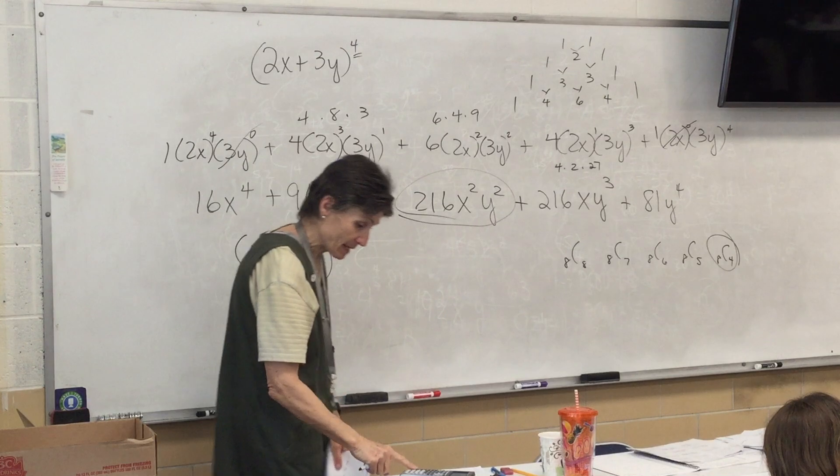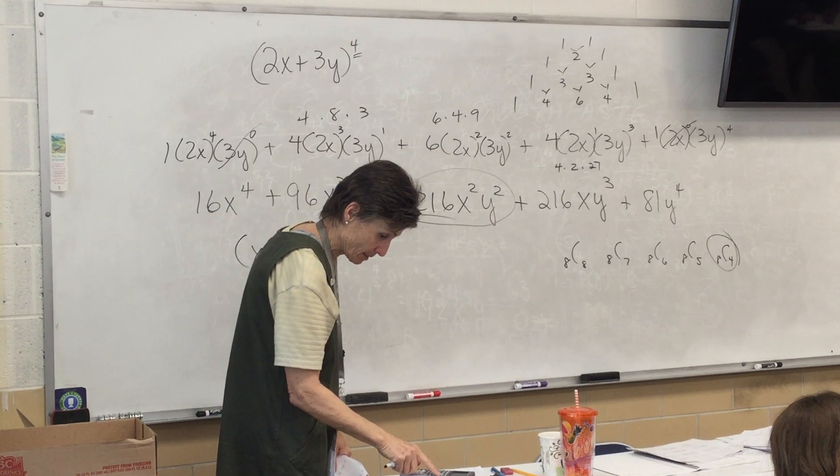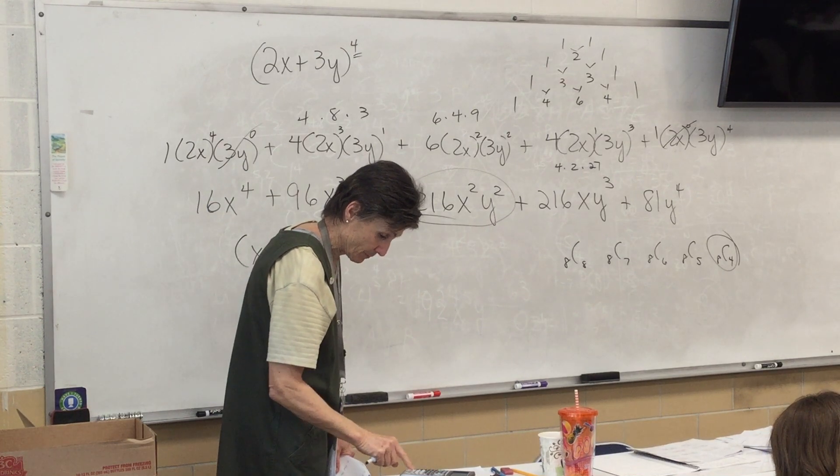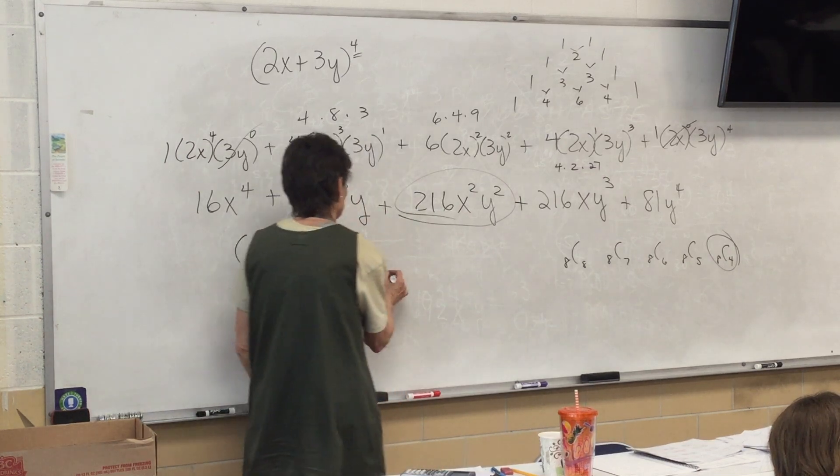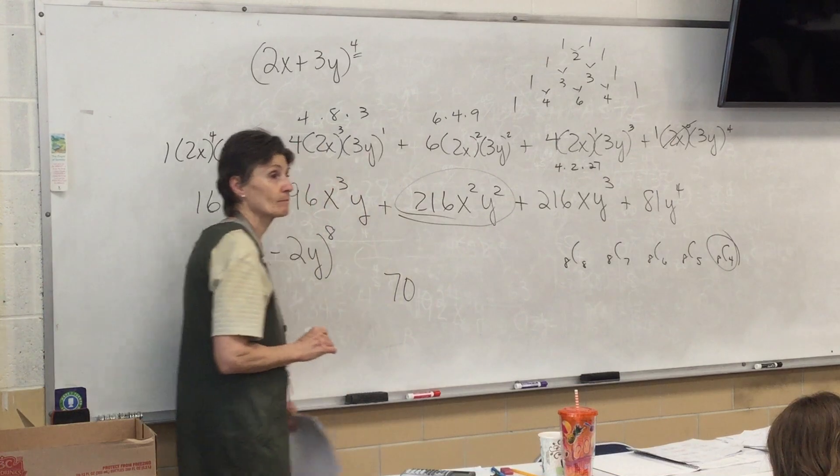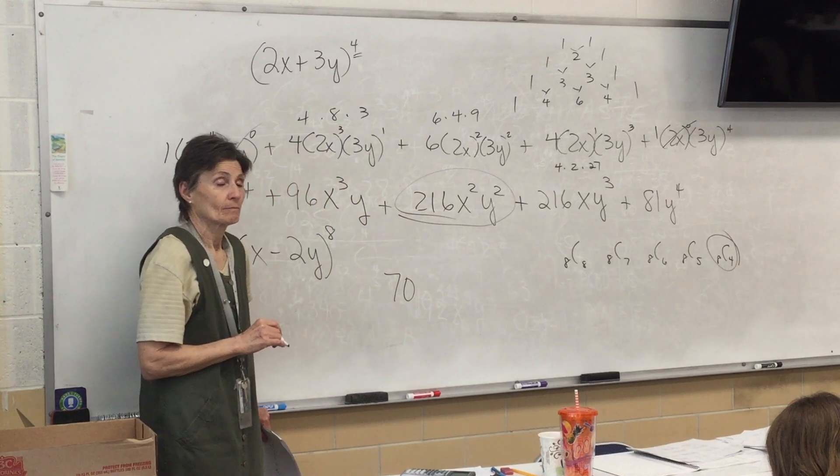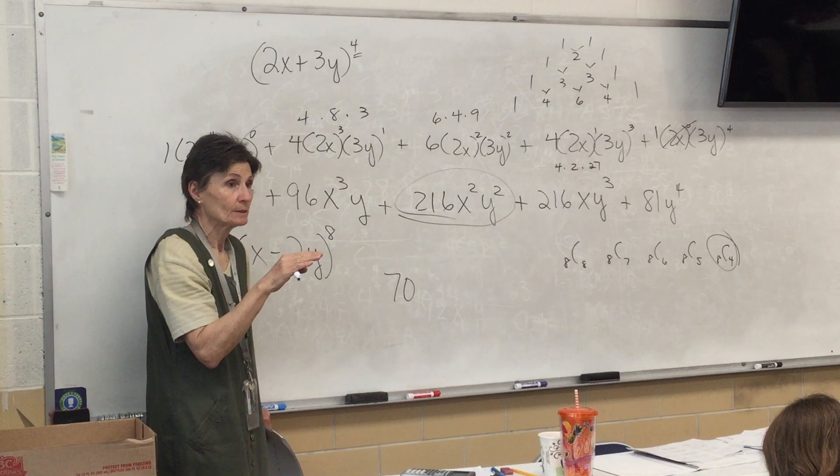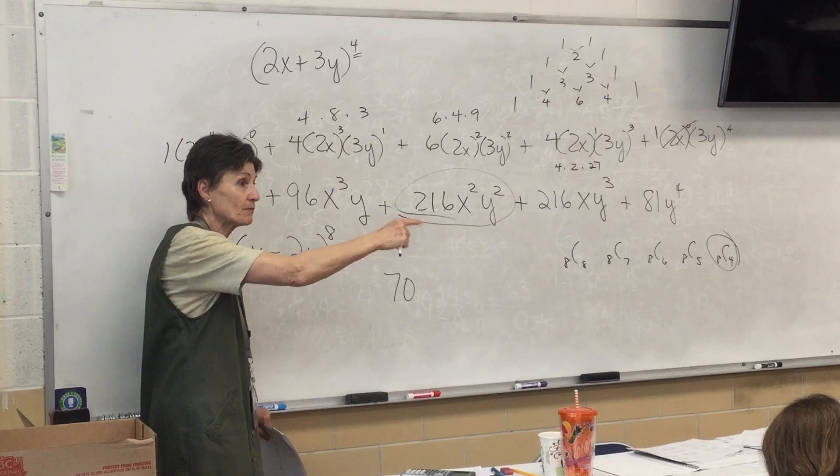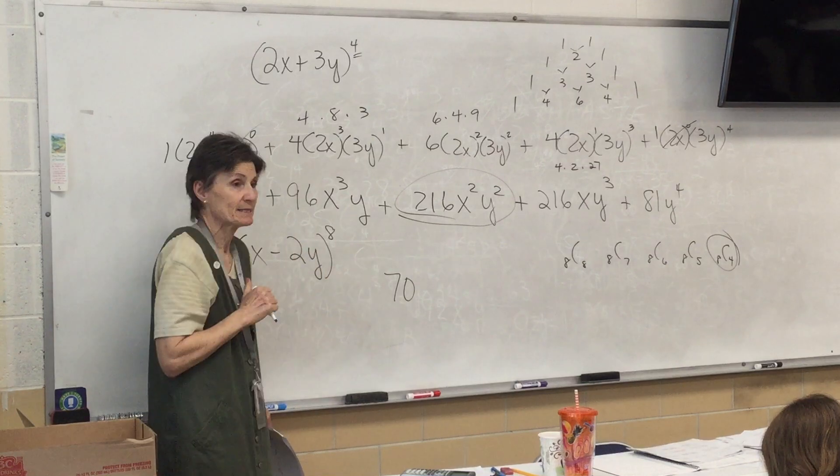So, I can type it on my calculator. 8C4. I got 70. Okay, everybody with me? If you wrote out the triangle and counted the 5th number in the 8th row, it would be 70.